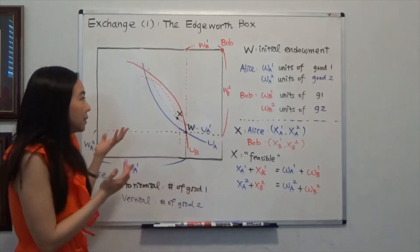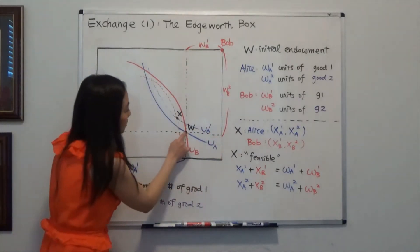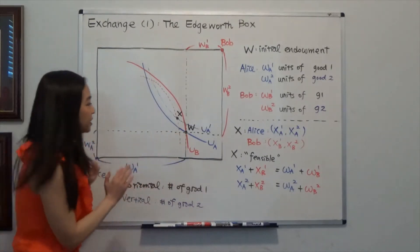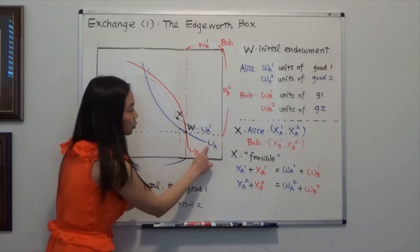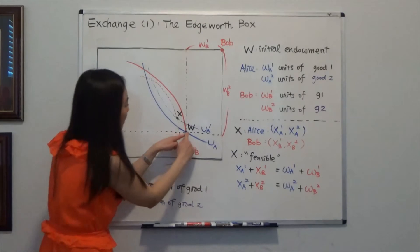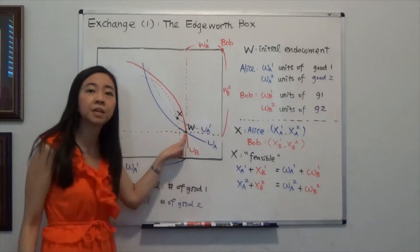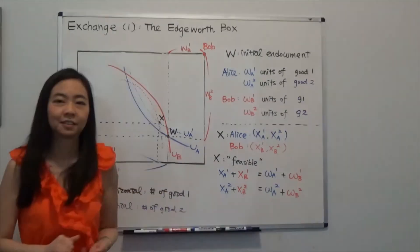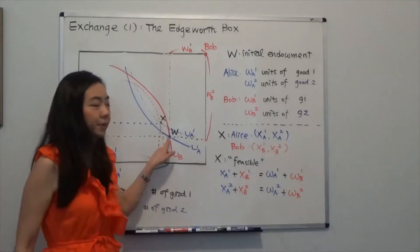So let's say their initial endowment is here. And you can see for Alice, her indifference curve is at level UA. And for Bob, his indifference curve is here. So his initial endowment gives him a level of utility UB. So their initial endowment is W.